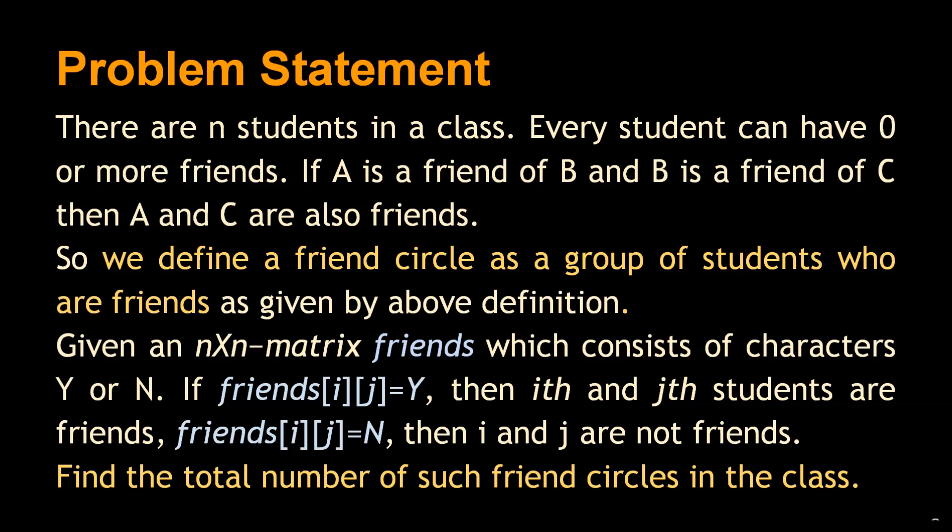The problem statement is: there are n students in a class. Every student can have 0 or more friends. If A is a friend of B and B is a friend of C, then A and C are also friends. We define a friend circle as a group of students who are friends by this transitive definition.